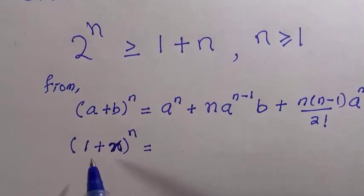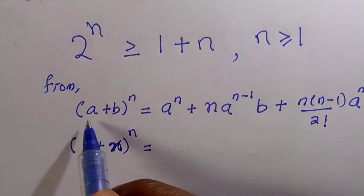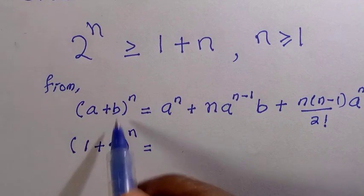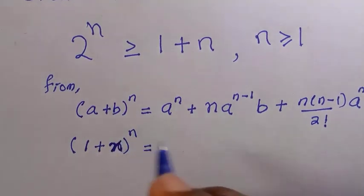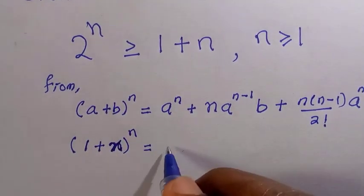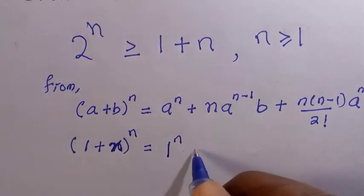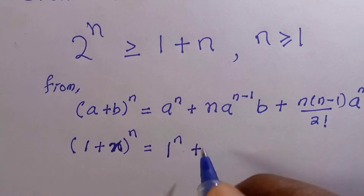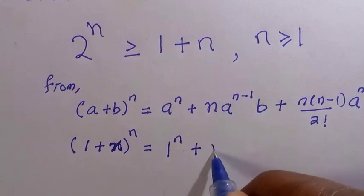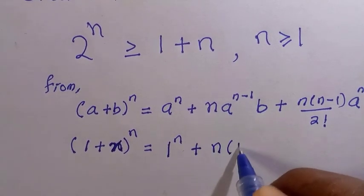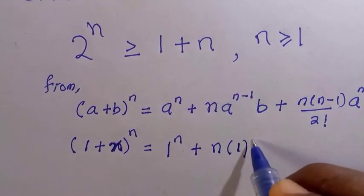So we are going to replace it in this expansion as a is 1, b is x, and n is still n. Then we have 1 raised to the power of n plus n bracket 1 raised